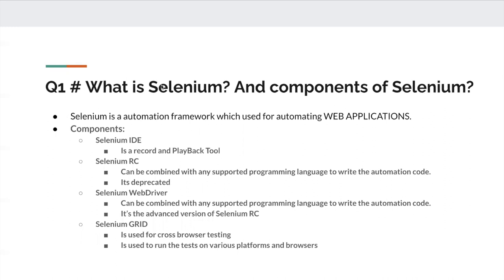Let's talk about what is Selenium and what are the different components of Selenium. Selenium is an automation framework which is used for automating web applications. The components of Selenium are: Selenium IDE, Selenium RC, Selenium WebDriver, and Selenium Grid. Using Selenium IDE you can record the steps on the web application and you can play those steps again and again.